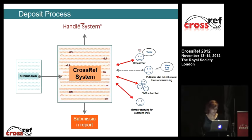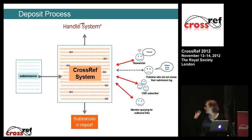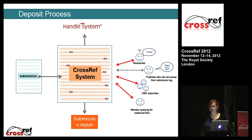Once the DOI has been registered, it's resolvable and queryable, meaning it can be used for linking and can be retrieved from our system by end users, CrossRef metadata subscribers, library link resolvers, and other members. There's someone with a sad face — that's someone who's trying to use a DOI that was published but not registered successfully.